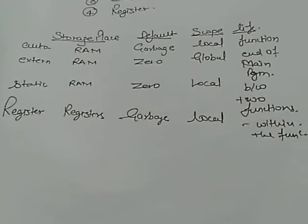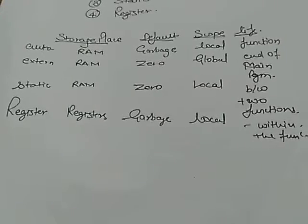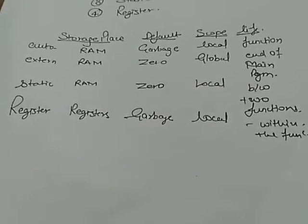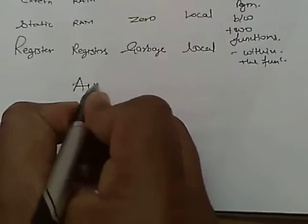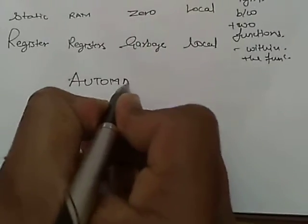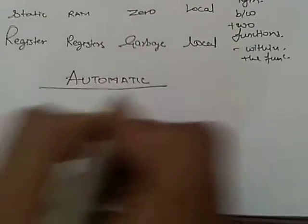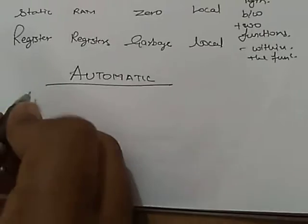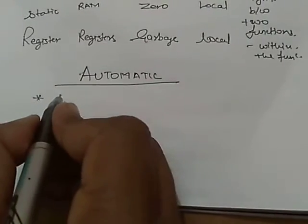Now, we will describe each of the class one by one. So, first of all, we are describing the automatic class. So, its main characteristics are point number one.